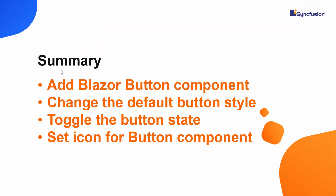Now let me make a quick summary of what we have seen so far. We have seen how to create a Blazor project using Visual Studio 2019 and added a Syncfusion Blazor button component in a server app. We have also seen how to change the default button style, toggle the button state, set an icon for the button component, and how to add a click event to it. You can download the working example from the GitHub link shared in the description below. You can also grab a free license key using the community license if you qualify. If you find this video useful, please click the like button and subscribe to our channel. Thanks for watching.